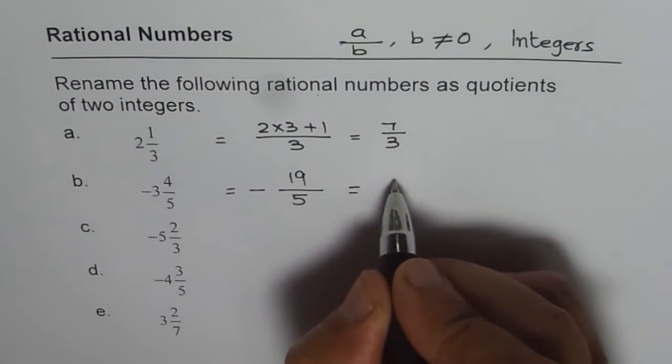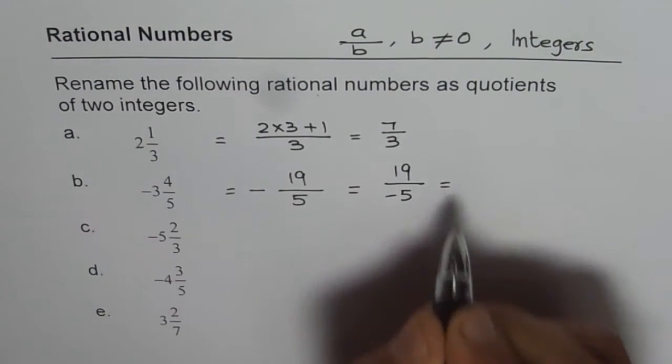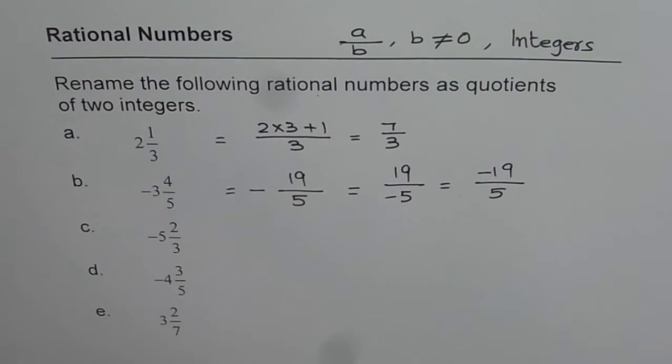Remember, this could also be written as 19 over -5 or -19 over 5. All of them are the same rational numbers and all are correct answers.